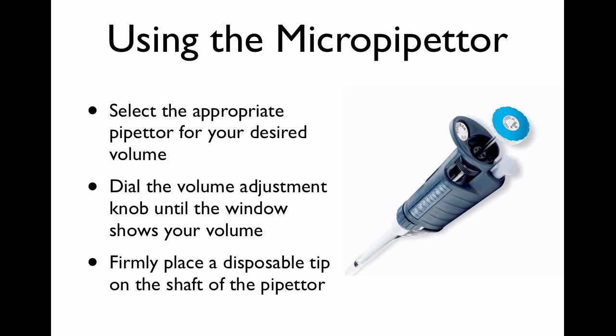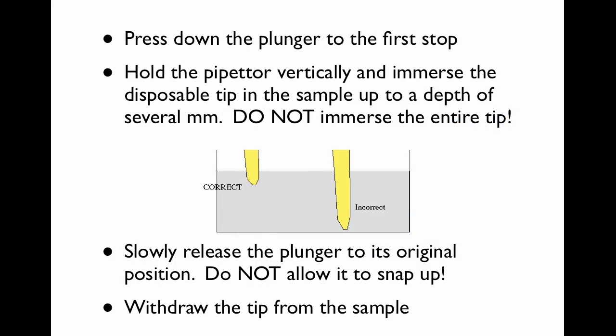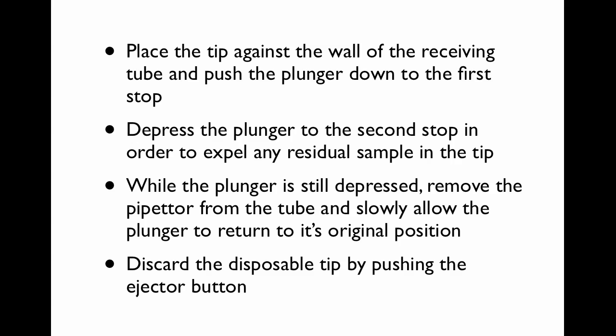To use the micropipetter, first of all, you've got to pick the right one. You've got to dial in the correct volume and then you've got to firmly place your tip on the end of the pipetter. And you're going to press the plunger down to the first stop. And then you're going to hold it vertically and immerse it a couple millimeters into your fluid. Don't go all the way to the bottom. You're going to slowly release the plunger. Do not allow it to snap. So, you want to do it in a controlled fashion. Snapping will change the volume that you're actually going to get. It will reduce your accuracy dramatically. And you're going to withdraw the tip.